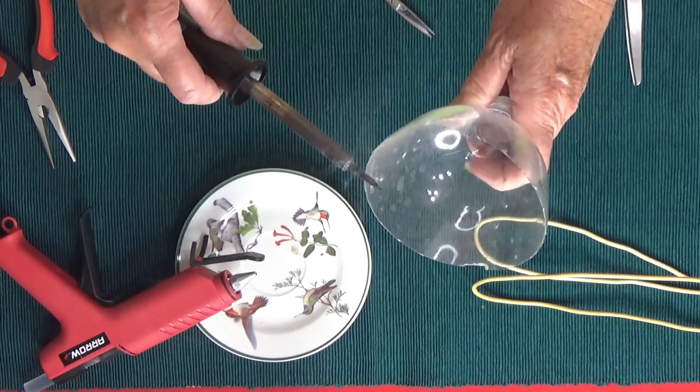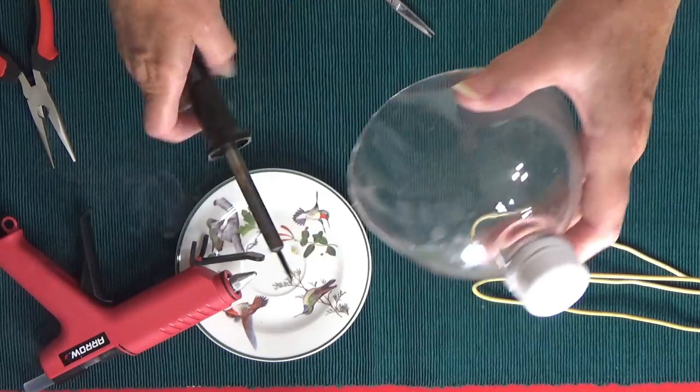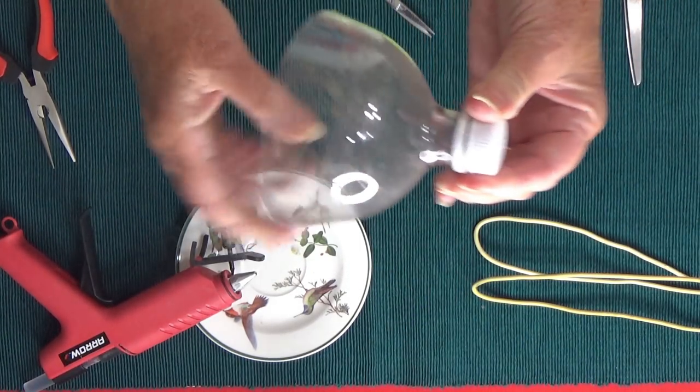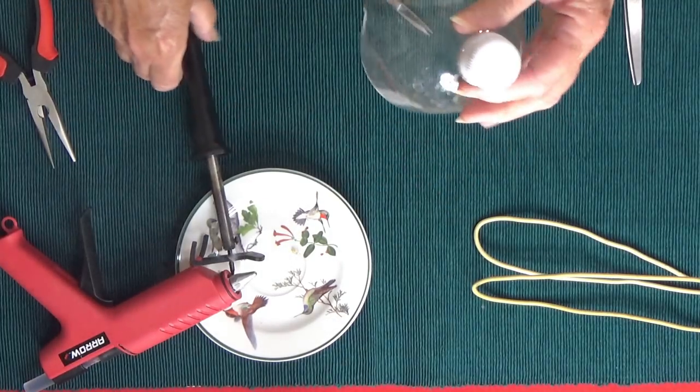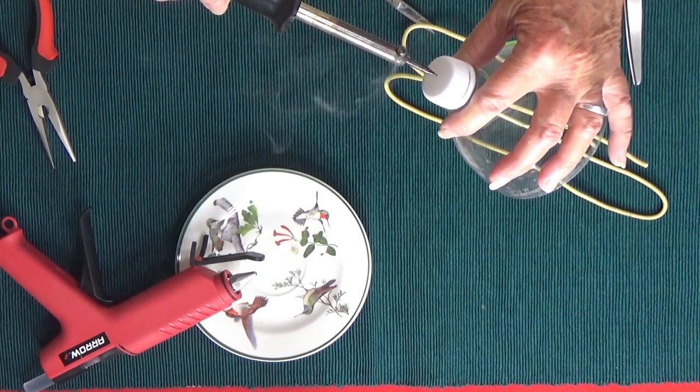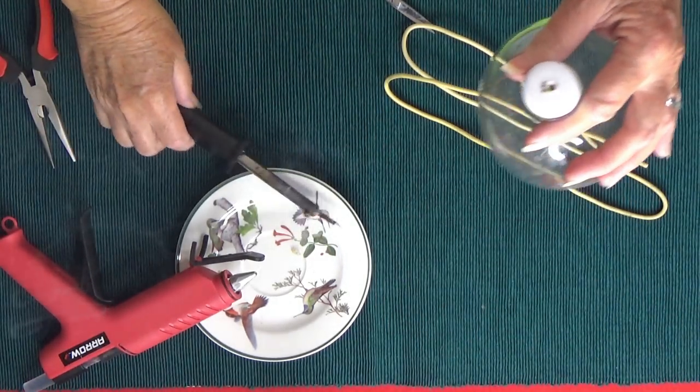Now what we're going to do with the soldering iron is we're going to make a hole. You want to make sure that the cap is on really good. Now we're going to make a hole so we can get some wire through. And you'll see as we go right in the middle, just one hole. That's it. We're done with the soldering iron now.